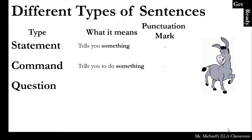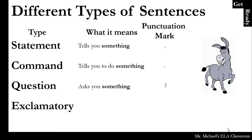A question asks you something and ends in a question mark. For example: "Is it a donkey?" And exclamatory — it tells you something exciting and ends in an exclamation point. For example: "Watch out for that donkey!" You can see how the voice changes depending on the type of sentence.